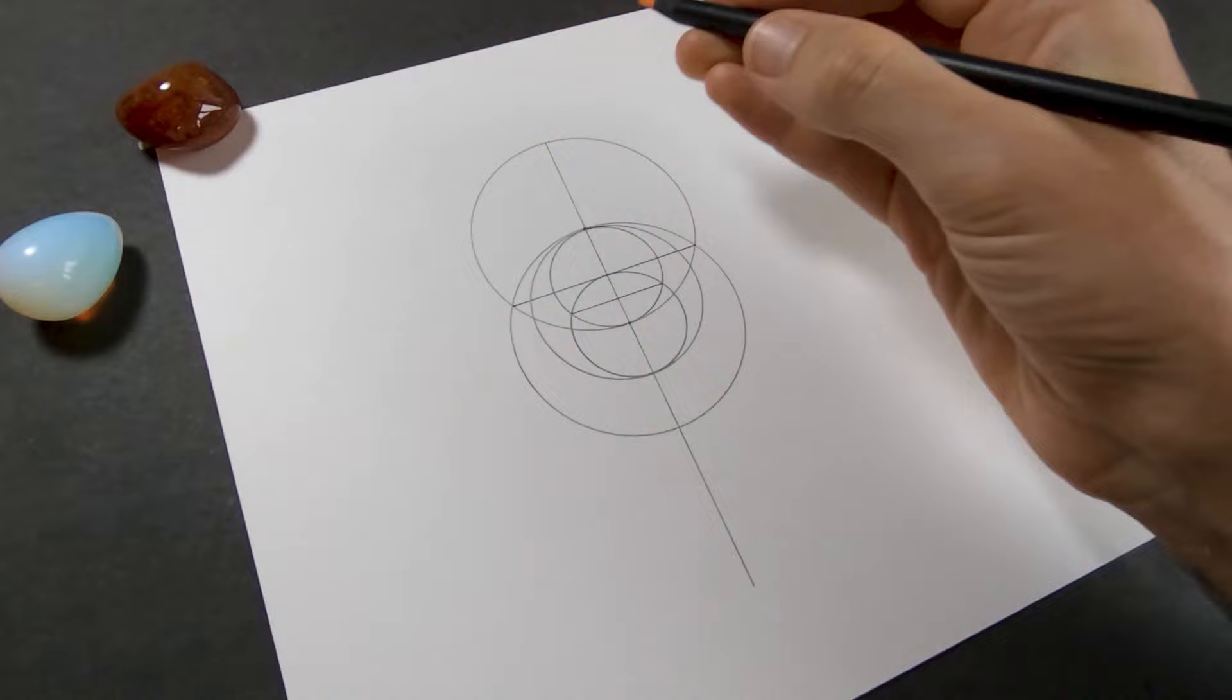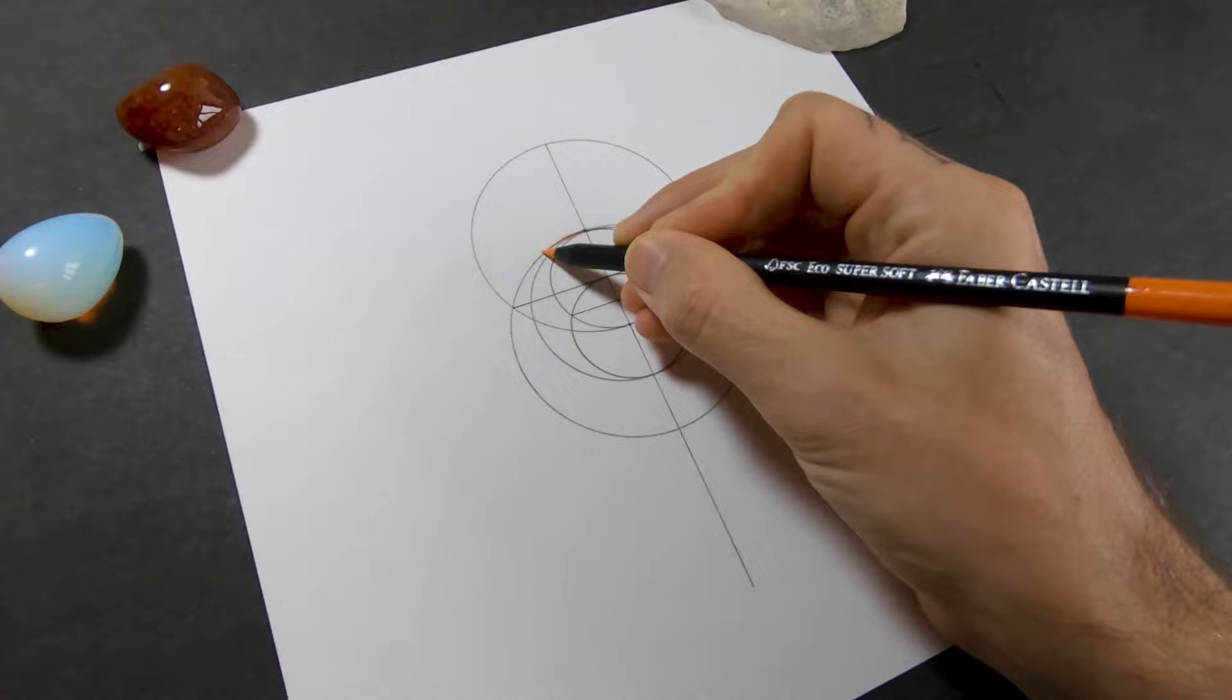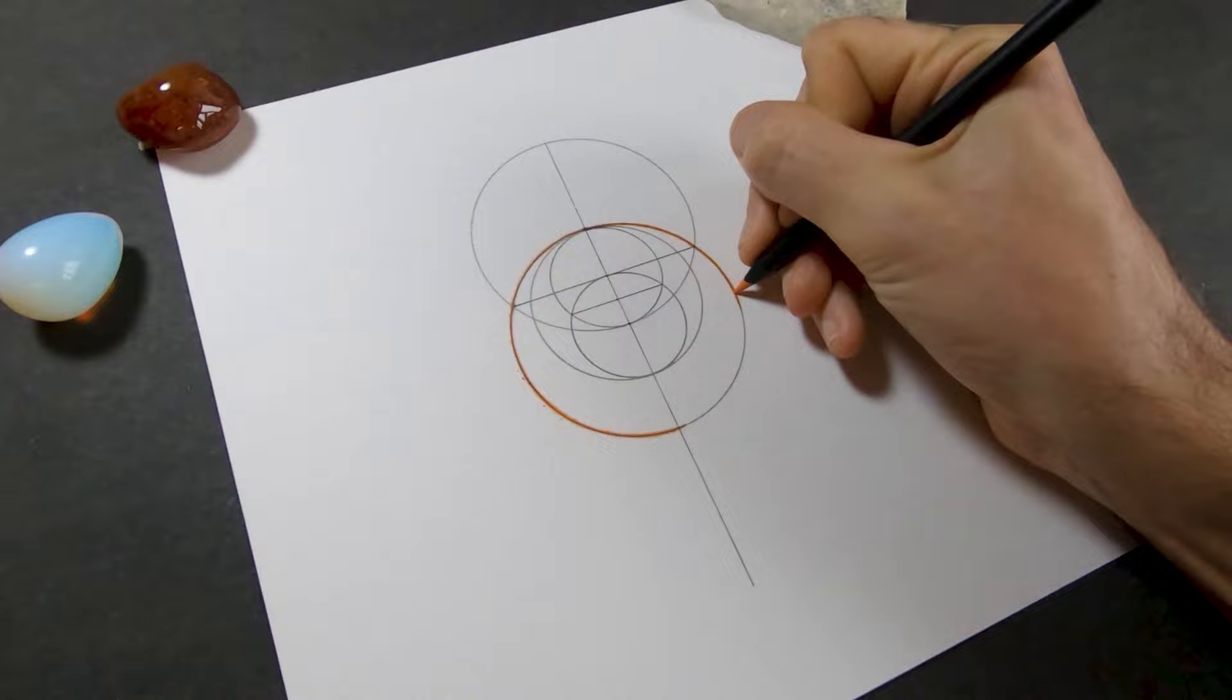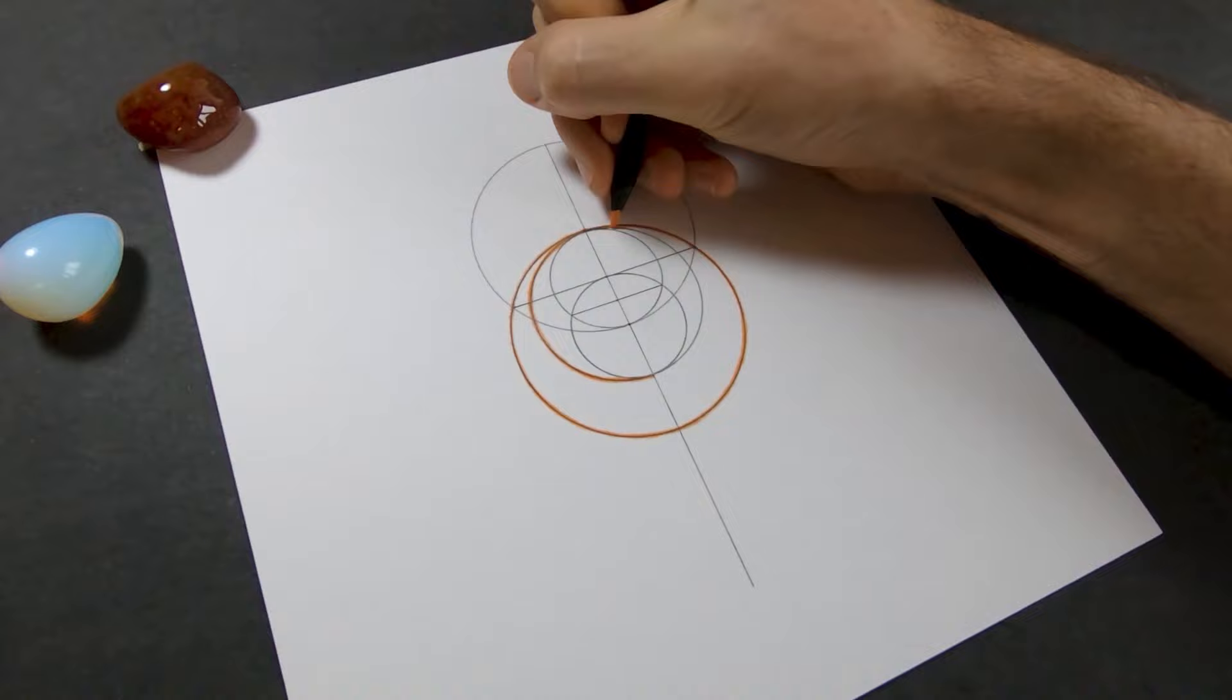So I'll mark that in orange just to show you exactly where it is. I'm using orange because it's the color of the sacral chakra. Every chakra has its own color. They're the colors of the rainbow.